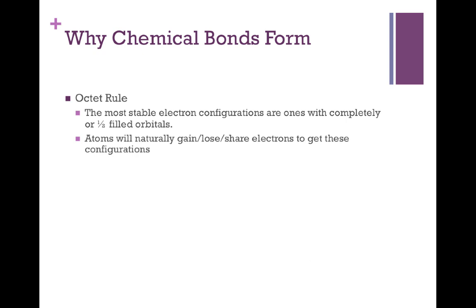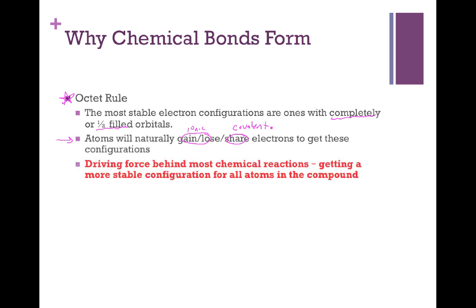Let's begin with a quick description of why chemicals form bonds in the first place. The thing that determines whether or not we form bonds is known as the octet rule. The octet rule tells us that the most stable electron configurations are the ones where we have either completely filled or one-half filled orbitals. Because those are the most stable, atoms will naturally gain or lose electrons — which creates ionic bonding — or share electrons — which creates covalent bonding — in order to get these configurations. The driving force behind why bonds form is atoms trying to get more stable configurations.